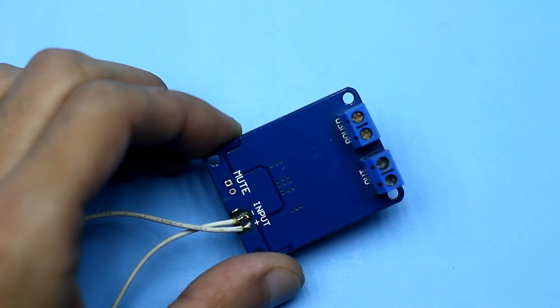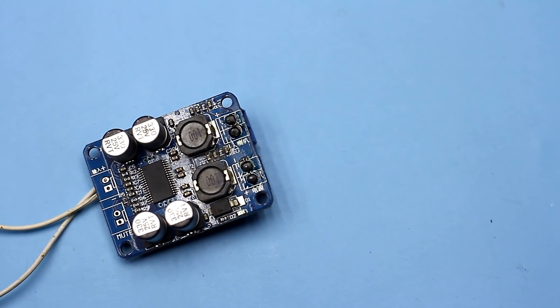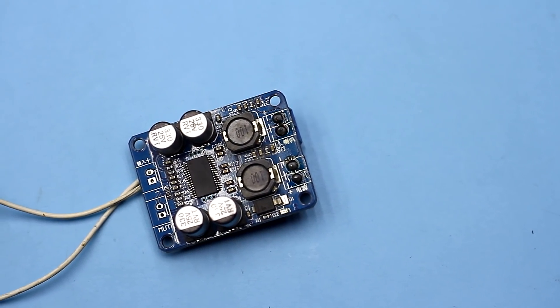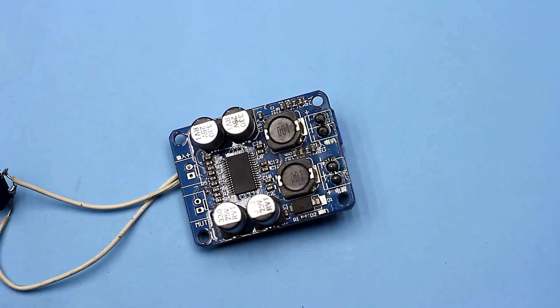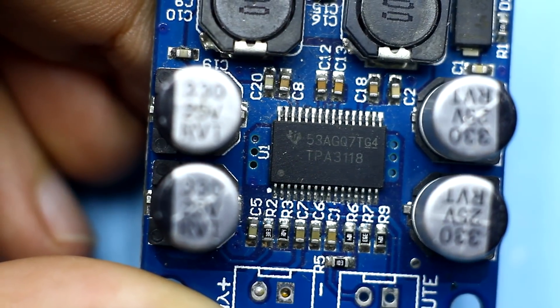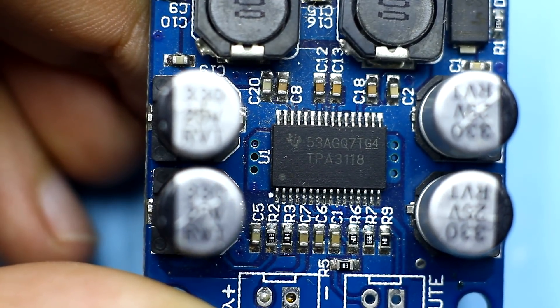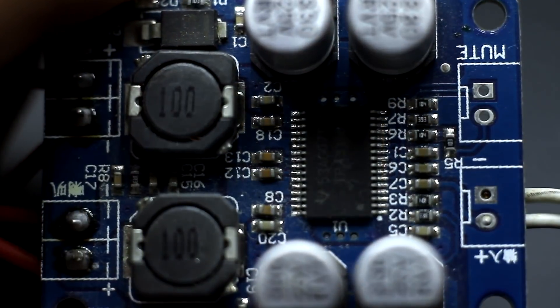Today we will measure the output power of the amplifier. For experiments, I will use a Chinese D-class amplifier board based on the TPA3118 chip. I bought a model on AliExpress for $2. A link can be found in the description.